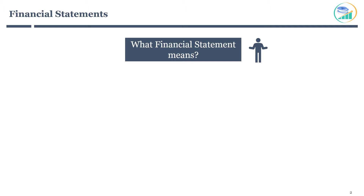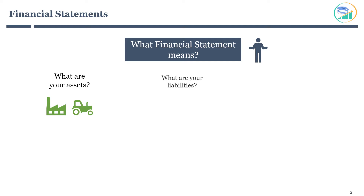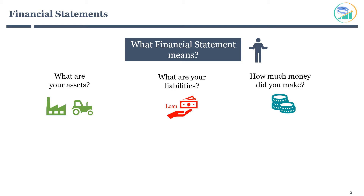In a nutshell, it talks about: what are your assets? It lists all the assets a business is invested in, like property, plant, equipment, financial assets, and so on. Next, what are your liabilities? It includes liabilities like bank loans, lease commitments, and so on. Further, it asks the most important question: how much money did you make? It measures the profitability of the business.